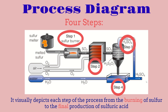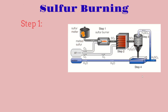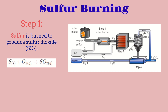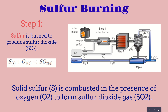Now we're going to go over each step. Starting with step 1, which is sulfur burning: the sulfur goes into the melter and then comes to step 1, where sulfur is burned to produce sulfur dioxide. We combine oxygen and melted sulfur to get sulfur dioxide. Inside this container, solid sulfur is combusted in the presence of oxygen to form sulfur dioxide gas, which is then contained in the tunnel.